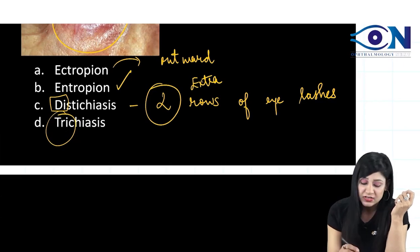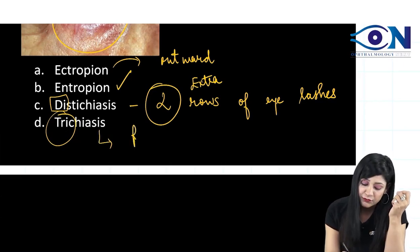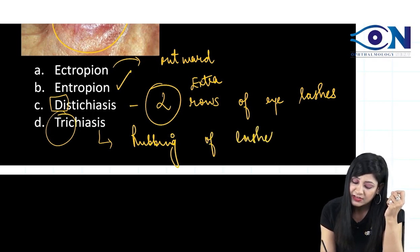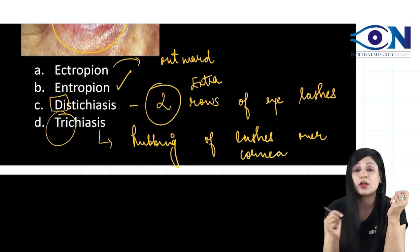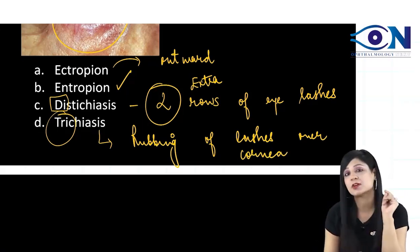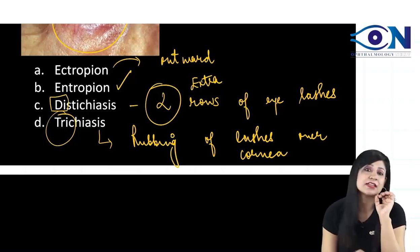What is the meaning of trichiasis? Trichiasis means if we are having rubbing of eyelashes, rubbing of eyelashes over the cornea. Rubbing of eyelashes over the cornea is called as trichiasis. Even if one eyelash rubs the cornea, it is sufficient enough to call as trichiasis.